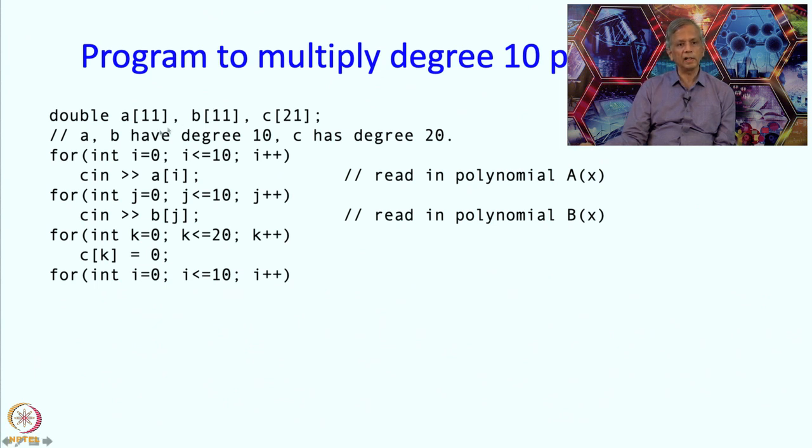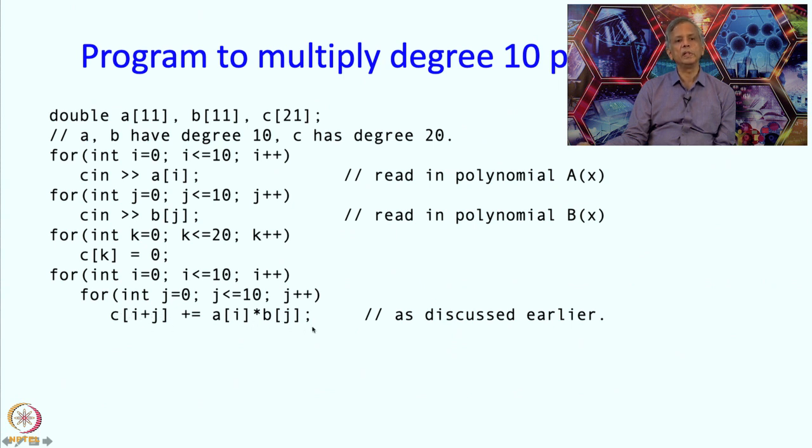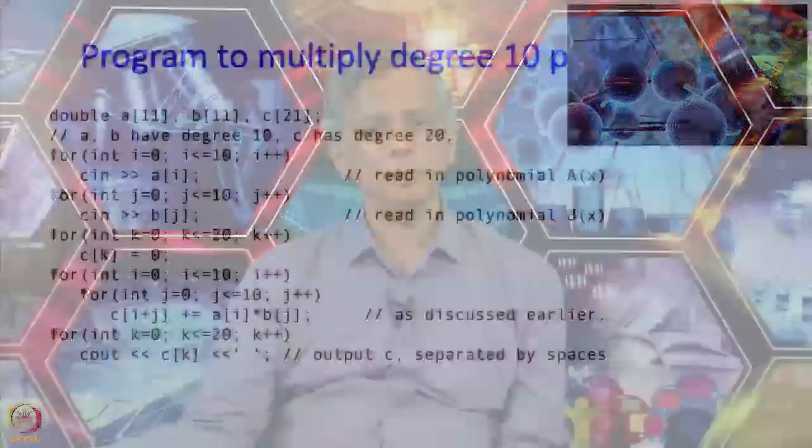So i is going to be the index which is going to range over the A polynomial, the terms in the A polynomial. And j is going to be the index which ranges over the terms in the B polynomial. And if we form the product Ai times Bj, we said earlier it should affect C of i plus j. So that is exactly what we are going to do. We are going to add Ai times Bj to C i plus j. Remember that this plus equal to is a short form for saying C i plus j equals C i plus j plus Ai times Bj. So that is it. That is the entire multiplication. After that we just have to print out the result.